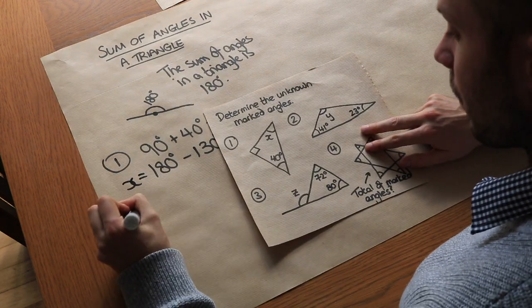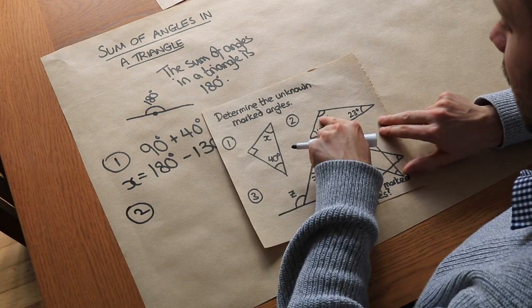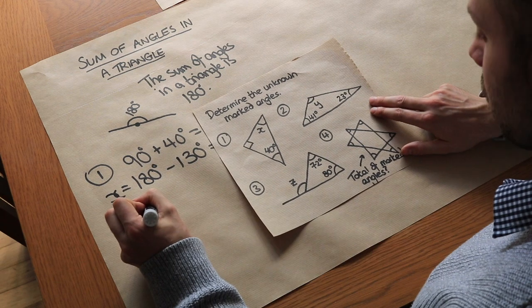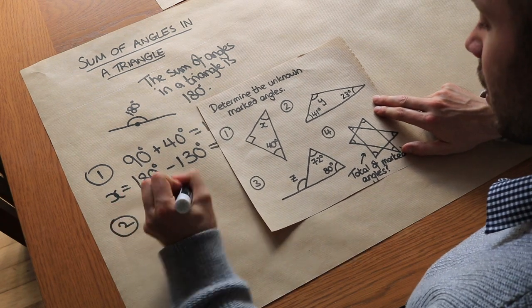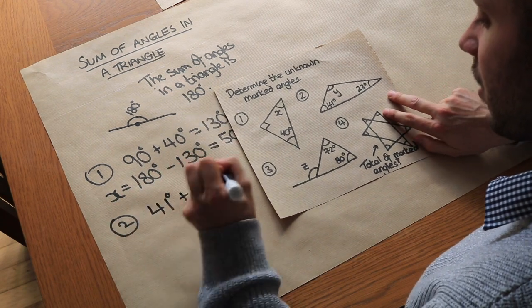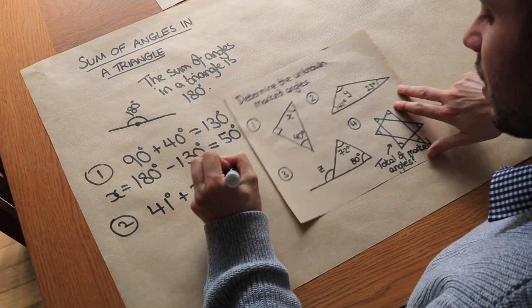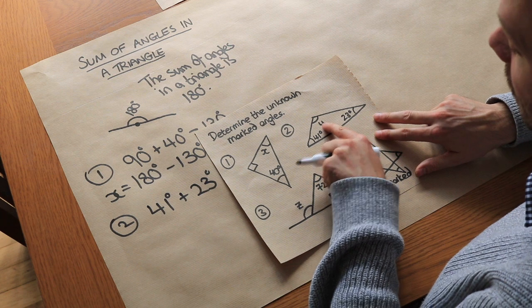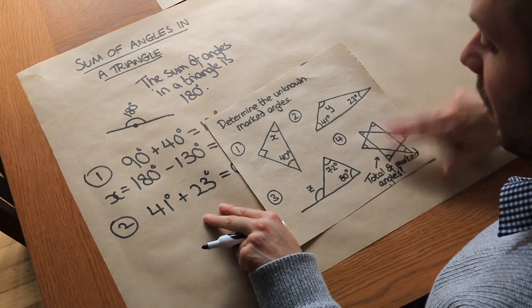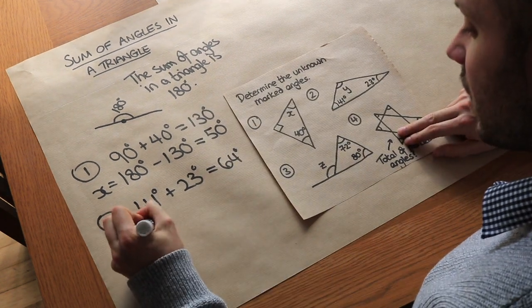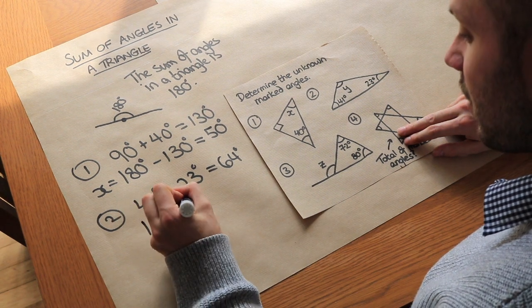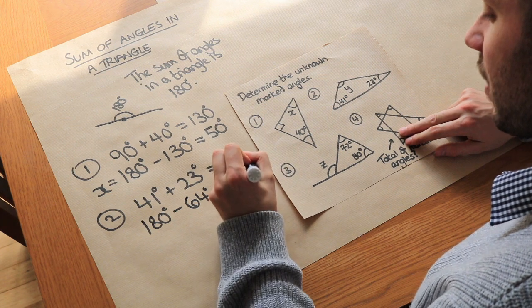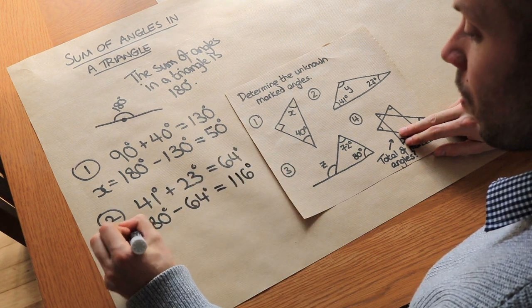What about question two? We've got this triangle, we've got these three angles and we want to know y. Well again we could add up these two angles. So 41 degrees plus the 23 degrees comes to 64 degrees. So the y must be what's left to get us up to 180. So we can just do 180 subtract the 64 and that gets us to 116 degrees and that is y.